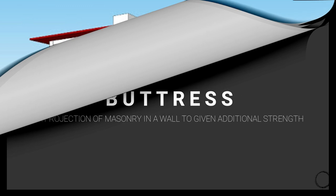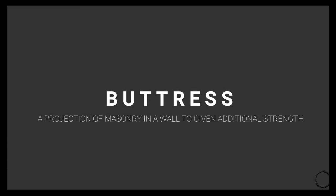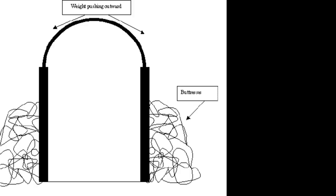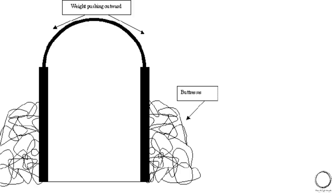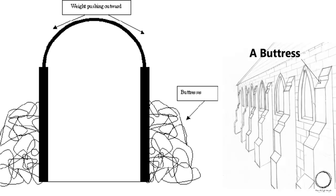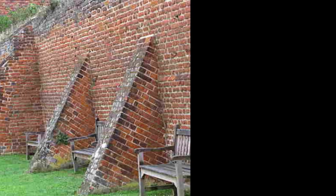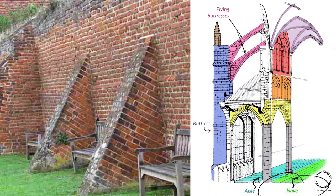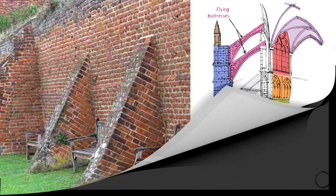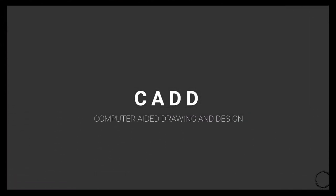The next term is buttresses, which means a projection of masonry in a wall to give additional support. As you can see in the diagram, there is an arch and the buttresses provide additional support to the vertical supports of the arch. It is clearly an additional support to anything which needs to stand taller.